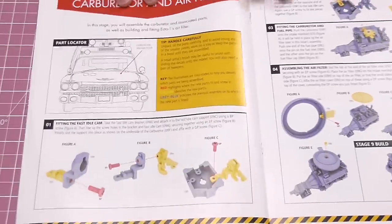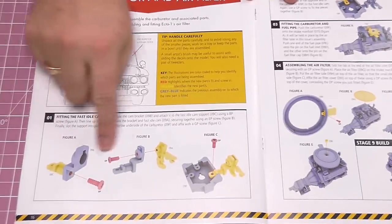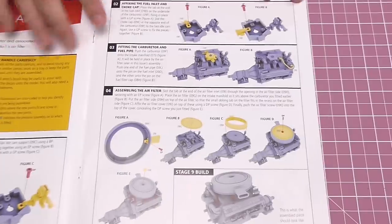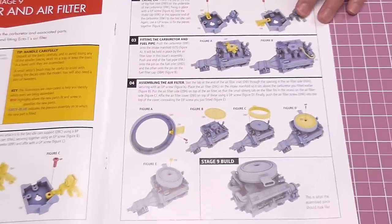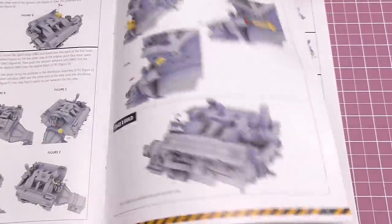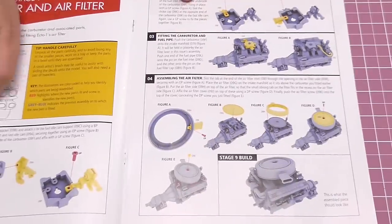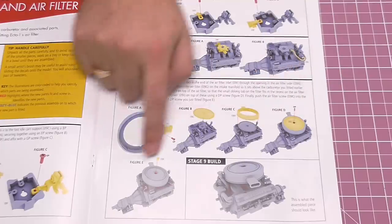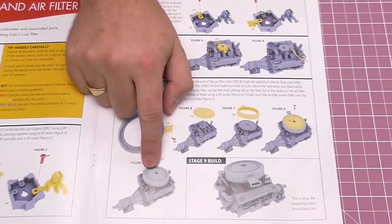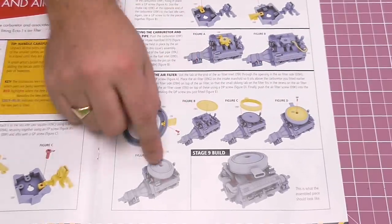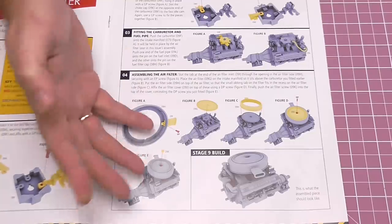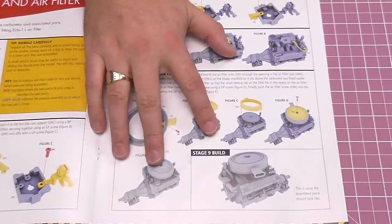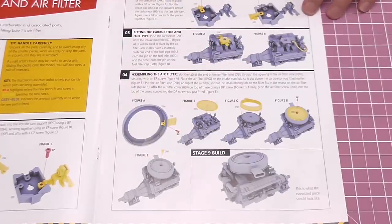This is what we've got to do: we're going to be doing the fast idle cam here, attaching that to the engine, then we're going to be doing the air filter. It doesn't look like there's a lot to do in this part, but there are a lot of fiddly little bits to put on. The air filter is held on by one screw, but when that's on it's going to be really hard to put the HT leads into the distributor. So I will put it on, but we'll probably have to take it off again when we put the HT leads in. Without further ado, let's get cracking.